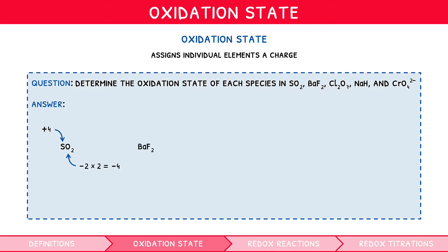In the second, fluorine is always −1; since there are 2, this totals to −2, so barium must be +2. In the third, oxygen is usually −2 and since there are 7, this totals to −14, so chlorine must be +7.